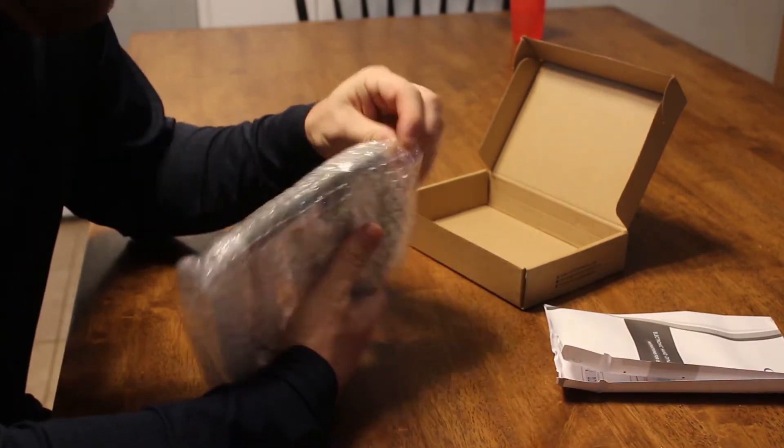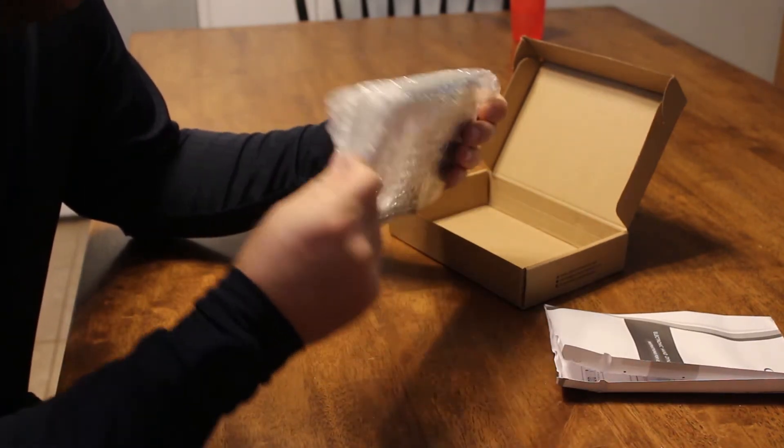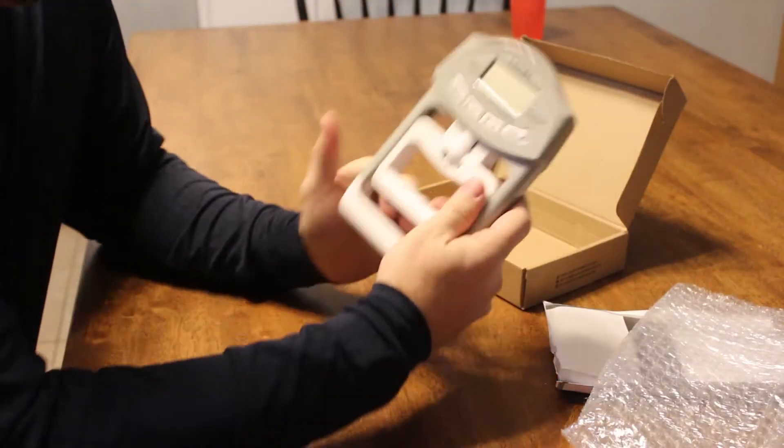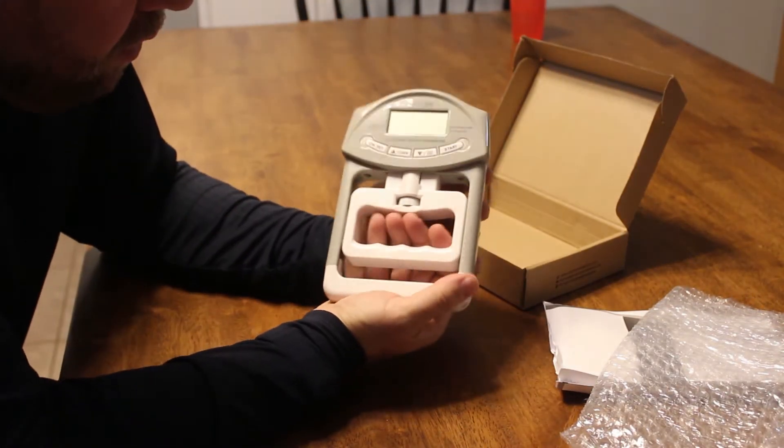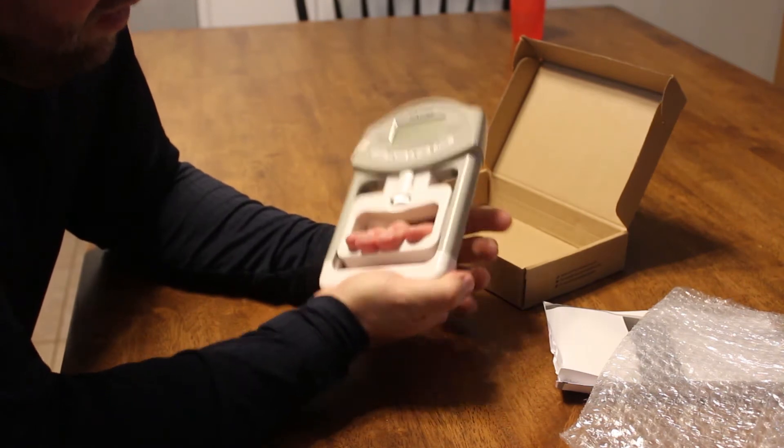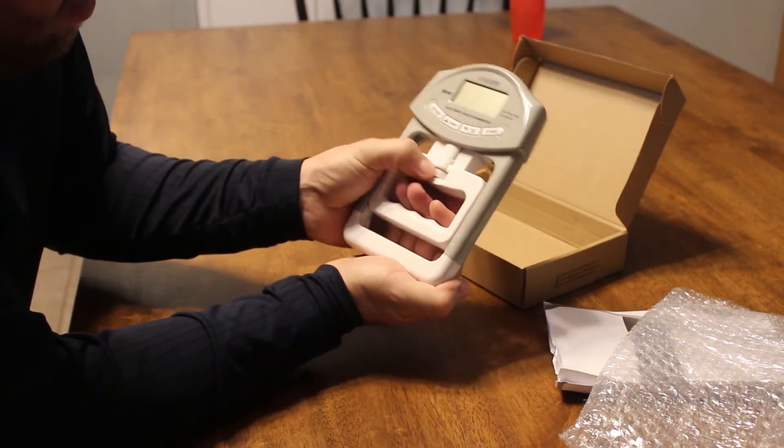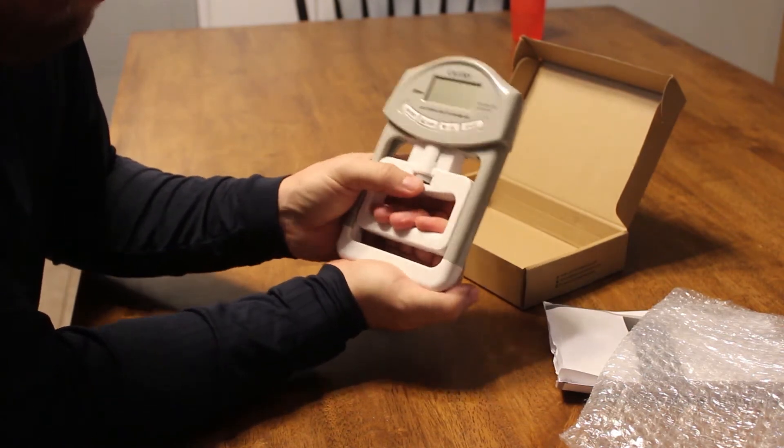Then we pull it out of our bubble wrap. And it looks just like this. So you're just going to pull down like that for your grip. It's got a gauge here thing to tighten or loosen it.